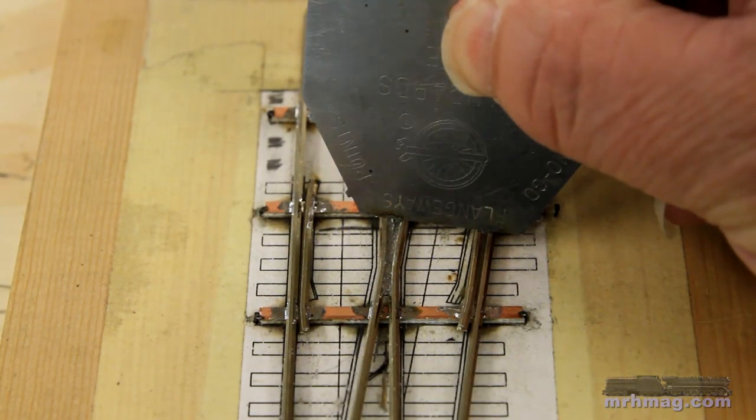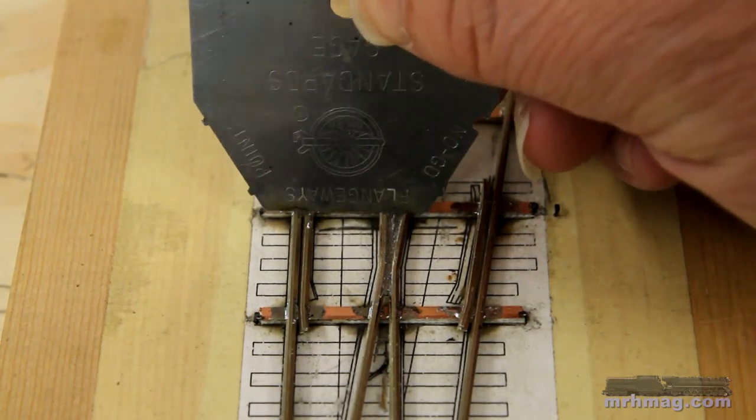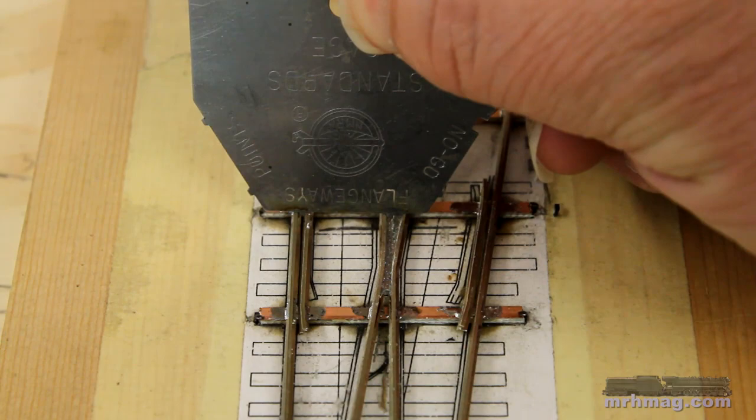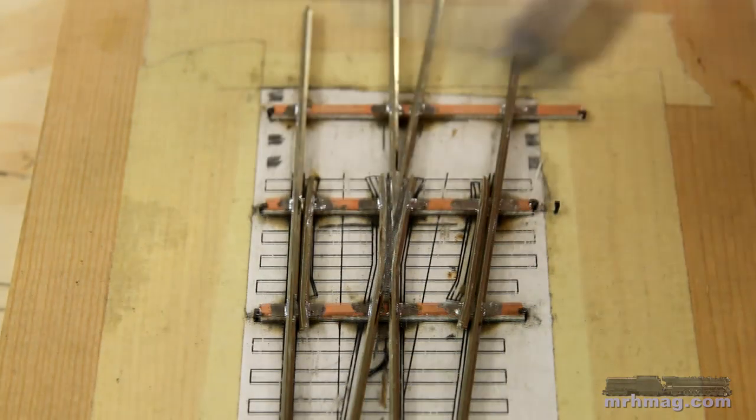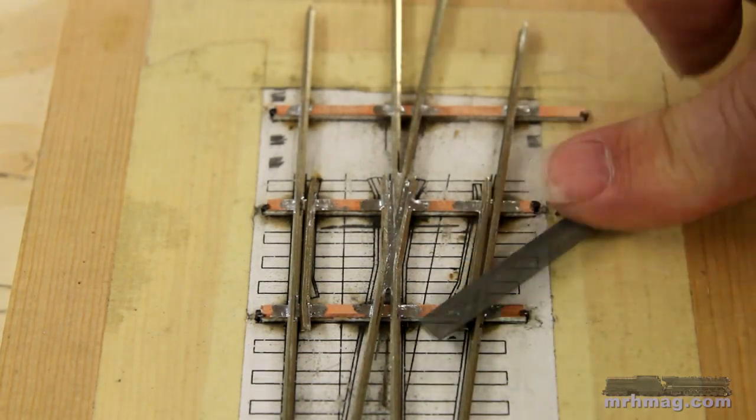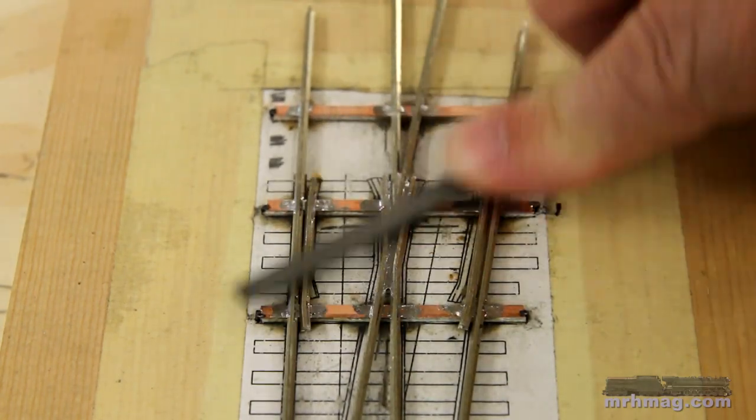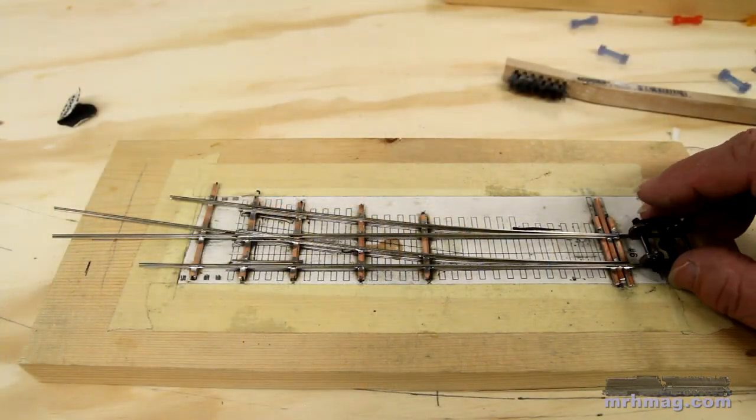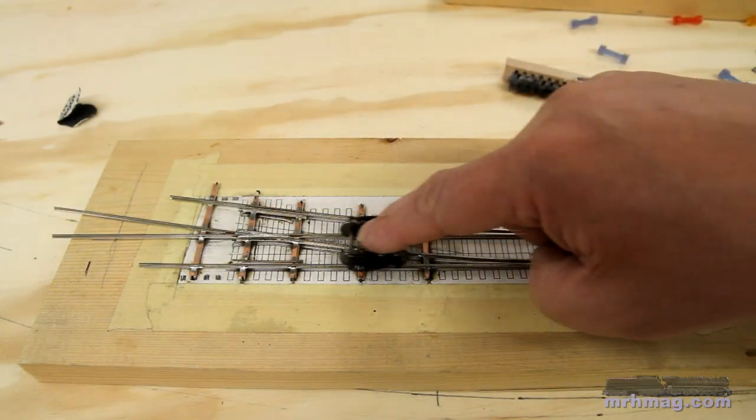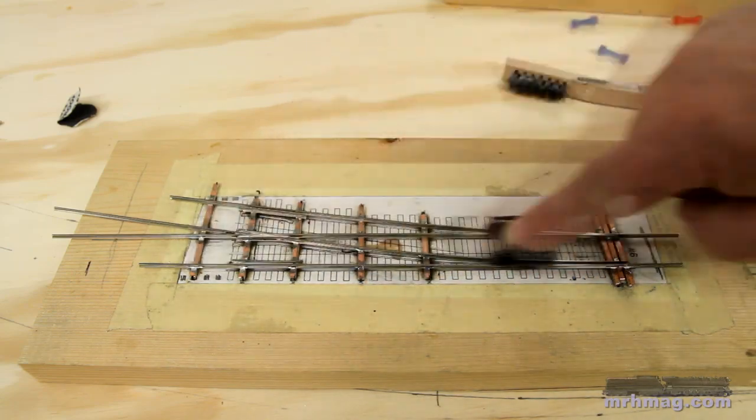Gauge at the frog is extremely important. I use the flangeway end of my NMRA gauge to check it. If there's a problem heat up the solder joint involved and nudge the rails into proper position. Go over the turnout with a wire brush to clean it up and use a jeweler's file to remove any excess solder from the rails. I use a truck with Intermountain semi-scale wheels to test the turnout. Looks like it's working pretty well.